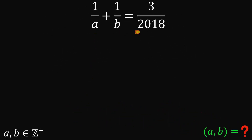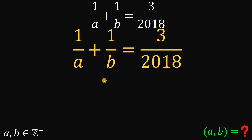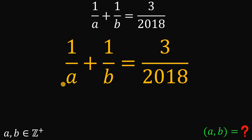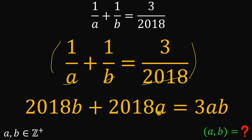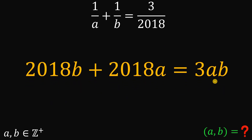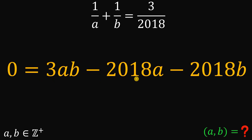So we have a Putnam question. If we're given 1 over A plus 1 over B equals 3 over 2018, what are the values of A and B? We don't want denominators, so we're going to eliminate A, B, and 2018 by multiplying the equation by A, then by B, then by 2018. If we do that, we get 2018B plus 2018A equals 3AB. Rearranging and setting equal to 0: 0 equals 3AB minus 2018A minus 2018B.